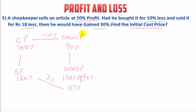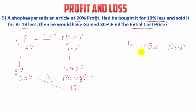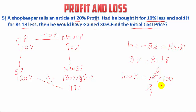The difference between the earlier selling price (120%) and new selling price (117%) is 3%. In money terms, this difference is Rs.18. So 3% = Rs.18. Therefore, 100% (initial cost price) = (18 / 3) × 100 = Rs.600. That is the initial cost price.